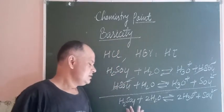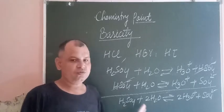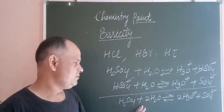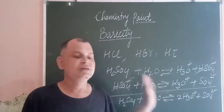So H2SO4, which is sulfuric acid (also known as orthosulfuric acid), when combined with water gives 2H3O+, so its basicity is 2.